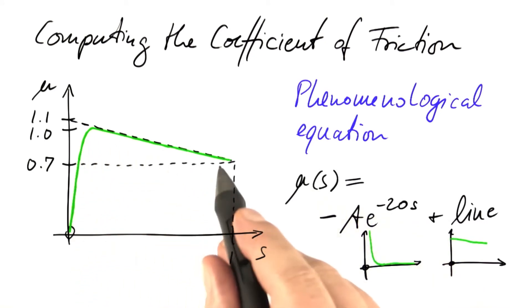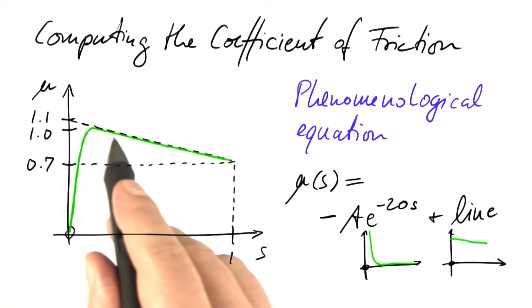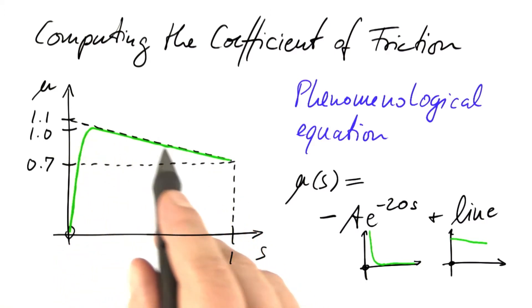If you look at the shape of this function, you may come up with the following idea. For reasonably large values of s, this function almost is a line. So why not use that line as one component in our equation?